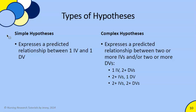A second way to categorize hypotheses is simple versus complex. If we only have one independent variable and how we expect it to interact with one dependent variable, that is a simple hypothesis — one and one. Anything more than that becomes a complex hypothesis. For example, one independent variable impacting more than one dependent variable is complex. Conversely, more than one independent variable interacting with one dependent variable is also complex and very common in statistical modeling. Essentially, anything beyond a one-to-one relationship is complex.